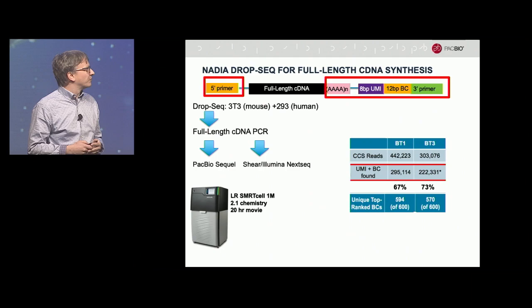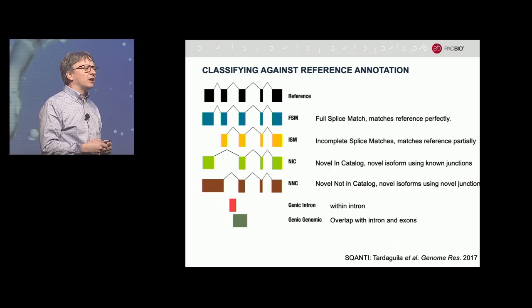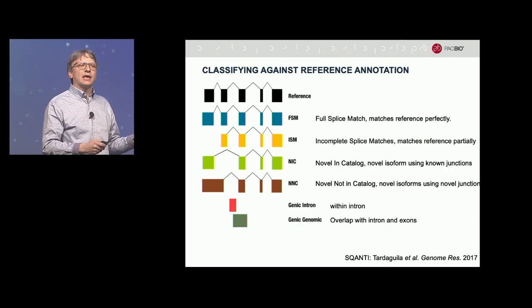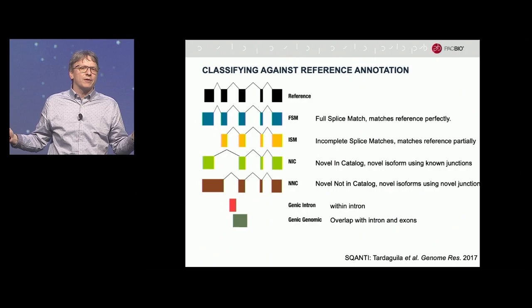We get long reads — but do these look like full-length cDNAs? To classify them, we use software called Scanti. Scanti takes a reference transcriptome — in this case, mouse and human GenCode — and compares the reads against those reference transcripts. A really nice full-length read would be an FSM, or full splice match, meaning every single splice junction in that known reference is seen.